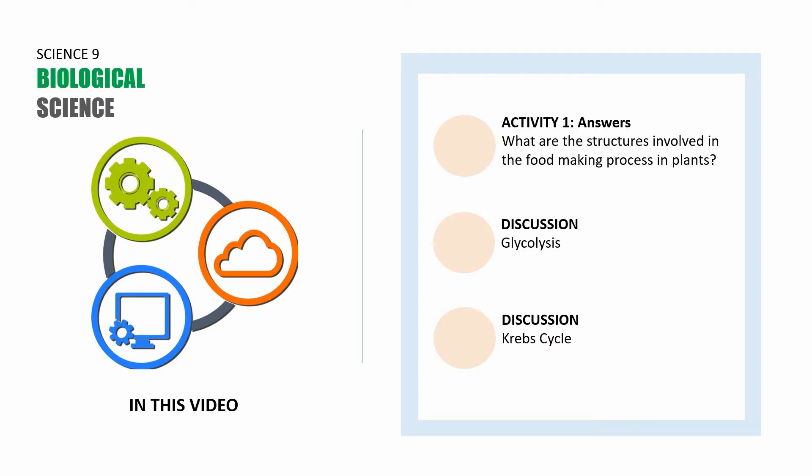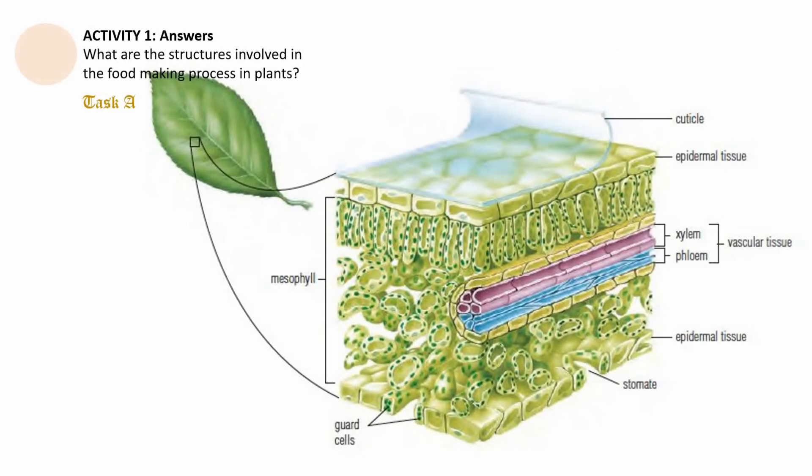The following are the answers for activity number one, What are the structures involved in the food-making process in plants? For task A, the following are the parts of the cross-section of the leaf.